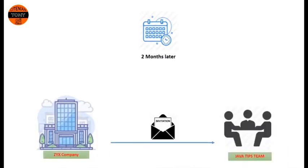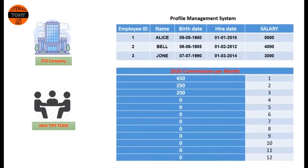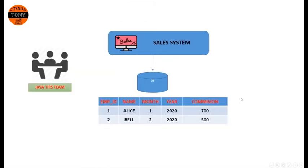Two months later, Six Company sent a new invitation to the development team. They said that the profile management system is fine, but the sales employees inside Six Company want to see their monthly commission on their profile — for example, commissions for January, February, and so on. The next day, in a meeting, the business analyst said that Six Company already has a sales system, and this system works with a database which contains the commission data we need to display.